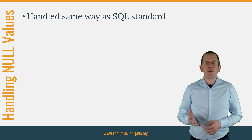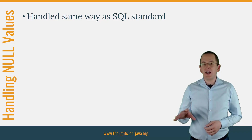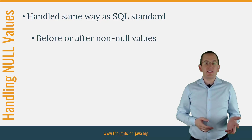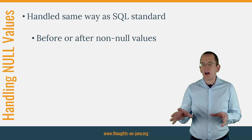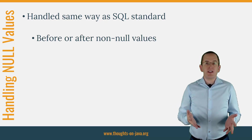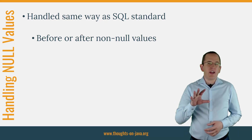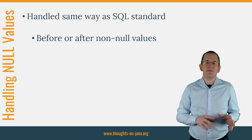The JPA specification defines that during ordering, Null Values shall be handled in the same way as determined by the SQL standard. The standard specifies that all Null Values shall be returned before or after all non-Null Values. It's up to the database to pick one of the two options. That makes the handling of Null Values more or less undefined.